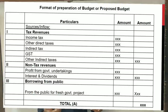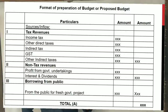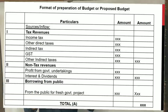Sources of government inflow include tax revenues. Direct taxes include income tax, wealth tax, and property tax. Other direct taxes include property tax, wealth tax, and gift tax. Indirect taxes include customs duty, excise duty, GST (Goods and Service Tax), sales tax on petroleum, and excise duty on liquor. The major indirect tax is GST — Goods and Service Tax. These are the major sources of inflow of cash.